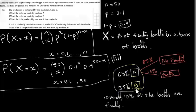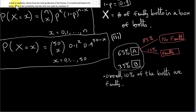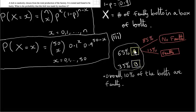A bolt is either produced by machine A or machine B. A bolt is randomly chosen from the total production of the factory. It is tested and found to be faulty. We want to find the probability that this bolt was made by machine A. Rather than thinking of this in terms of probabilities, let's think of it in terms of frequencies.